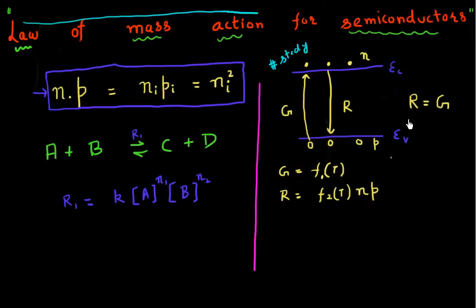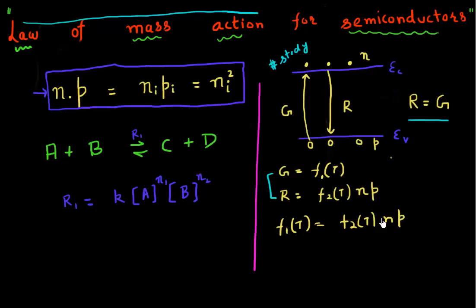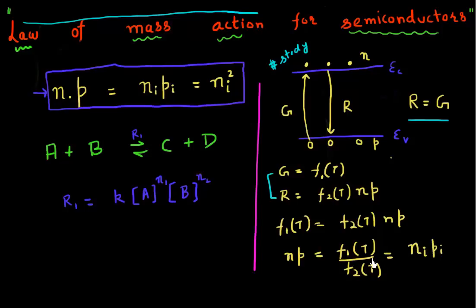Let's equate those two terms and see what we get. If I equate my generation and recombination rates, I get F1(T) is equivalent to F2(T) multiplied by n and p. Separating n and p and dividing by F2, n multiplied by p comes out to be a function that depends only on temperature. So if I had an intrinsic semiconductor, it would have essentially the same product of n and p, since these terms just depend upon temperature. I've derived the formula: in a semiconductor, the number of electrons multiplied by the number of holes remains a constant depending only on temperature, and this equals Ni squared.